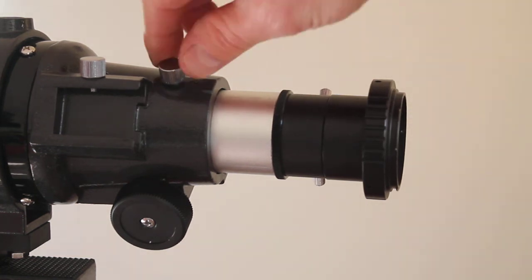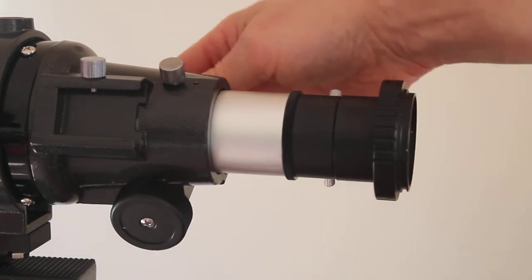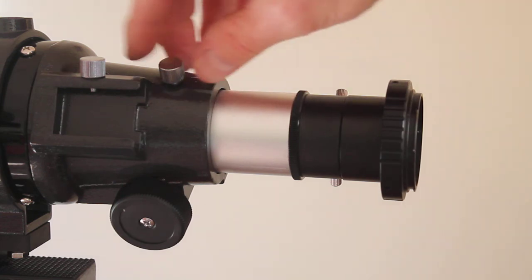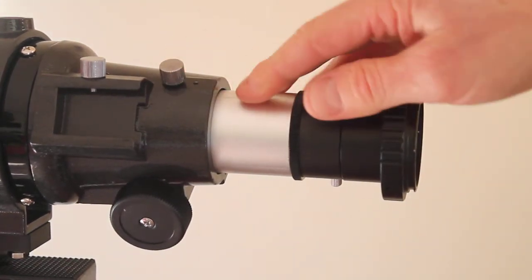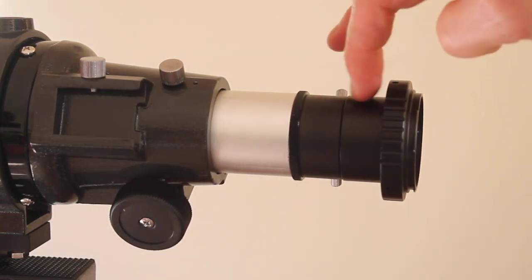On the top here, you can adjust the tension of the focus. If you get it in focus and you've got the scope at an angle and don't want it to creep, you can tighten it so it stays nicely in focus.